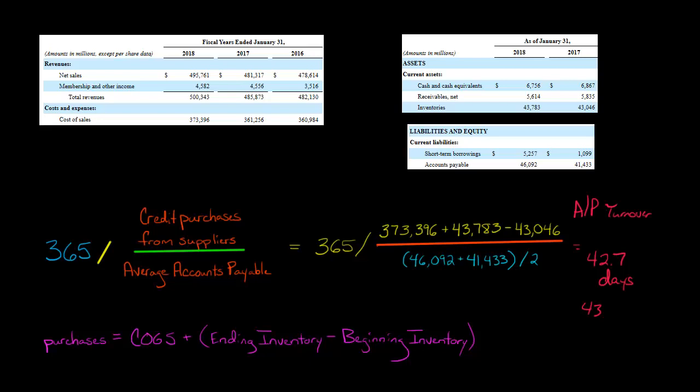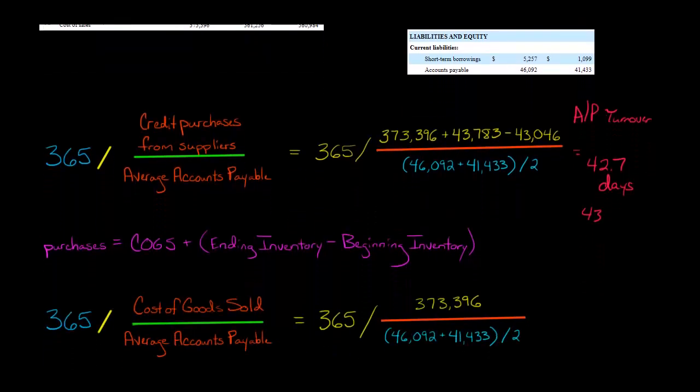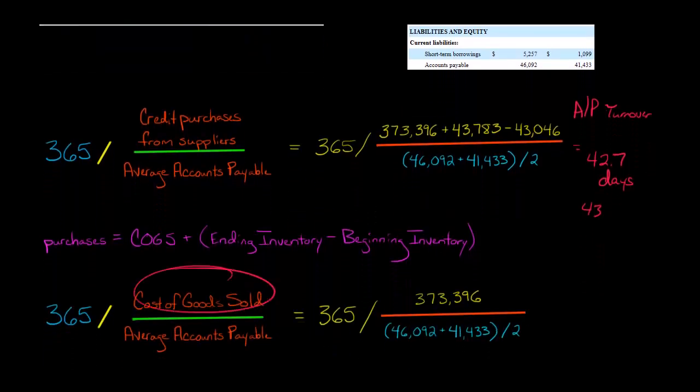Now, if you did it the other way, if you did it the way where you just used cost of goods sold in the numerator, then you would just have $373.396 billion. The denominator would be the same. And the number would be a little bit different. You'd have 42.8. So that's 365 divided by this whole thing here. It'd be 42.8 days.